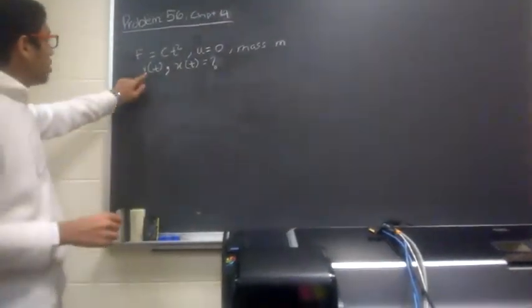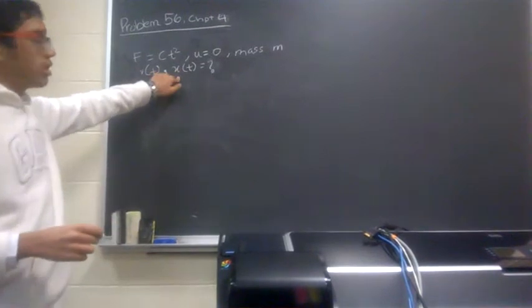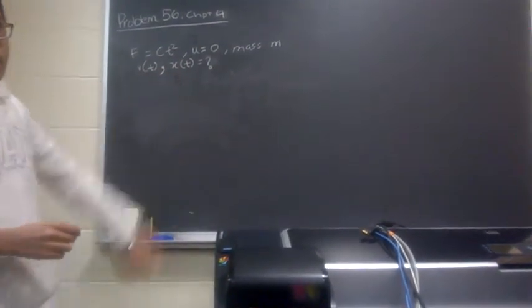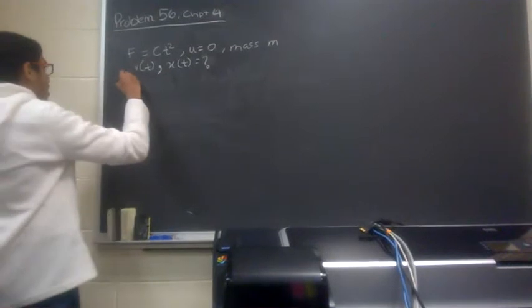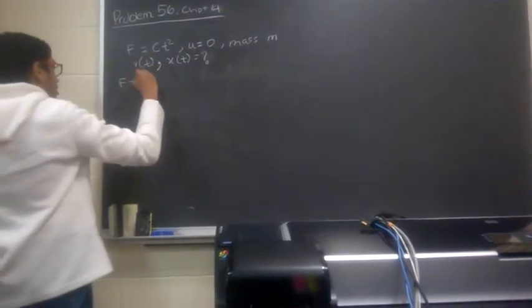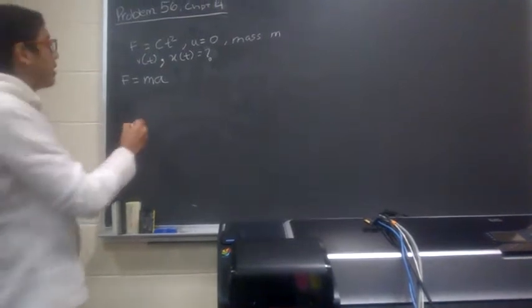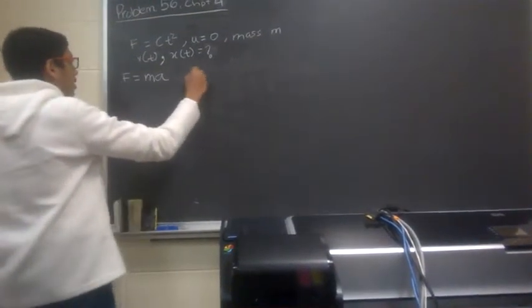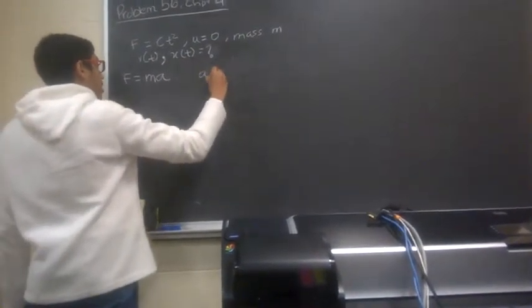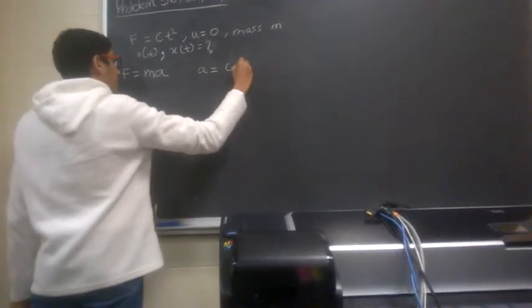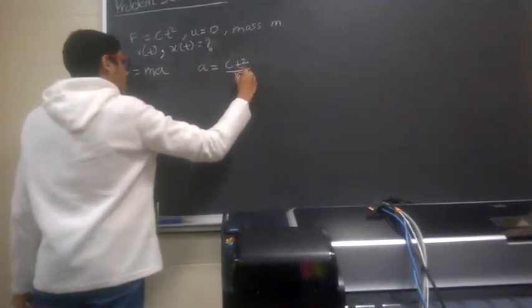And we're given that the object has a mass of m. And what we have to do is find the velocity and the position of the object as a function of time. So for starters, we use F is equal to ma to find the instantaneous acceleration as a function of time. So from here, we can get acceleration instantaneous is ct squared over m.